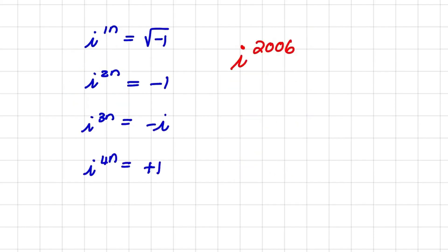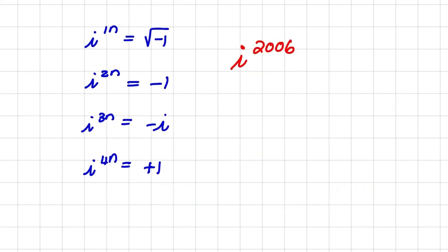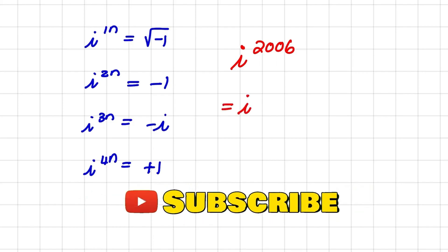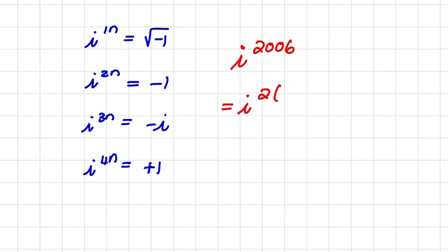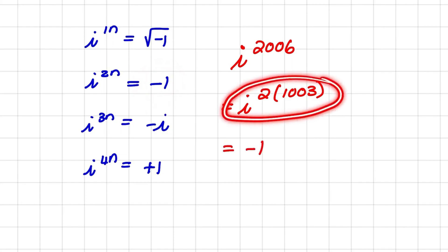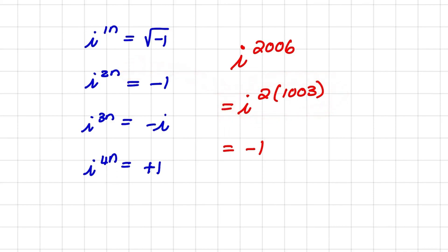So let's say we want to find i to the power of 2006. That equals i to the power of 2 times 1003, so that value would be equal to negative 1, because this is the same as saying i to the power of 2n. Notice that this is a real solution.